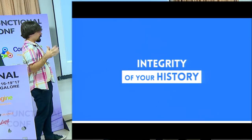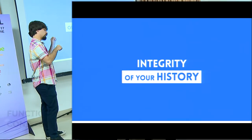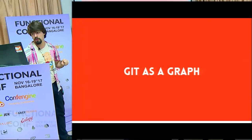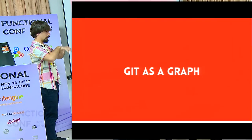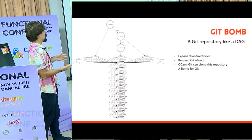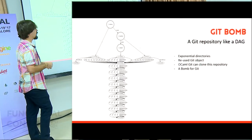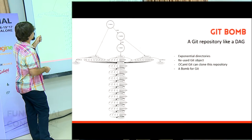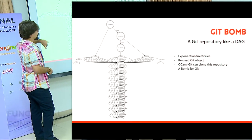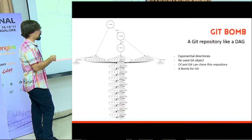Because we have the link between the tree, the blob, and the commit, we can consider Git like a graph — a big graph. Let me show you. It's a specific Git repository, and if you want to clone this Git repository, you could have a problem with Git and get a segfault.